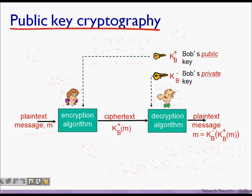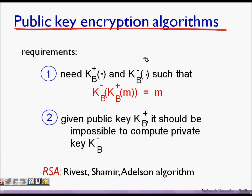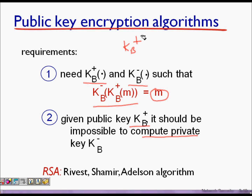So what are the requirements for public key encryption? We need a public key kb+ and private key kb− such that you can encrypt with the public key but only the authentic receiver can decrypt the message to get m back. Also, given the public key kb+, it should be computationally impossible to compute the private key — otherwise anyone could decrypt the message. One of the most famous public key algorithms is the RSA algorithm, developed by Rivest, Shamir, and Adleman.